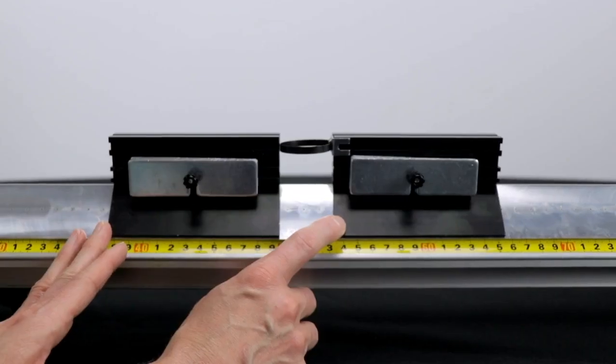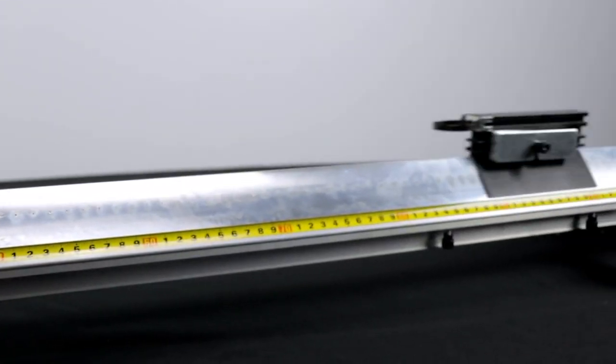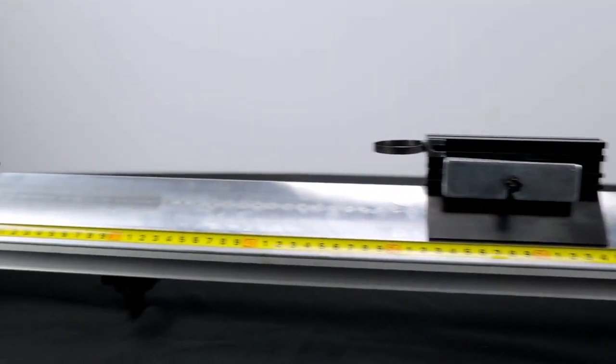To demonstrate elastic collisions using the air track, set one cart at rest near the center of the track. Give the second cart a velocity, directing it away from the first cart. The cart will bounce off the end of the track and rebound, reaching a stable speed before colliding with the first cart.